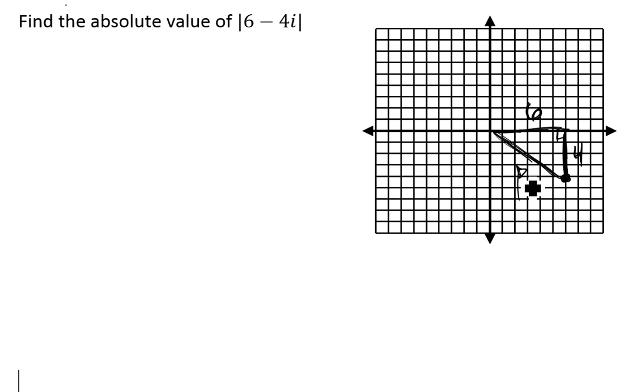If I was solving for this hypotenuse, I could call it x. I could say that 6 squared plus - and I could say negative 4 squared, but when I square it, the length of that side is just 4. So 6 squared plus 4 squared equals the hypotenuse squared, which I'll call x. So 6 squared is 36, plus 16, equals x squared.